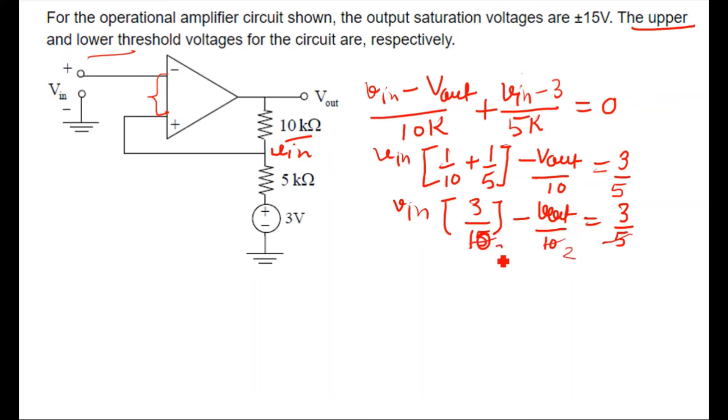When we solve it, you want to make it more simpler. So you can make it, this will become 2, this will become 2, and here both the terms are having 2, so we can multiply this 2 to here. So we will further solve it. So it will become 3 V_in minus V_out.